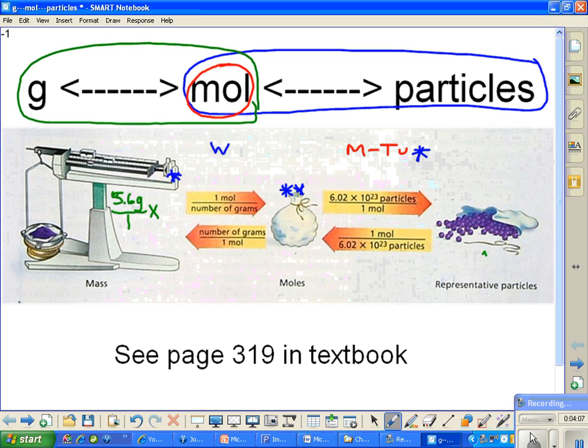And if we wanted to go the other way, we would start out with something like 39 moles of something over 1. And then our second fraction would be right here. We would use this arrow to get us back to the mass or grams.